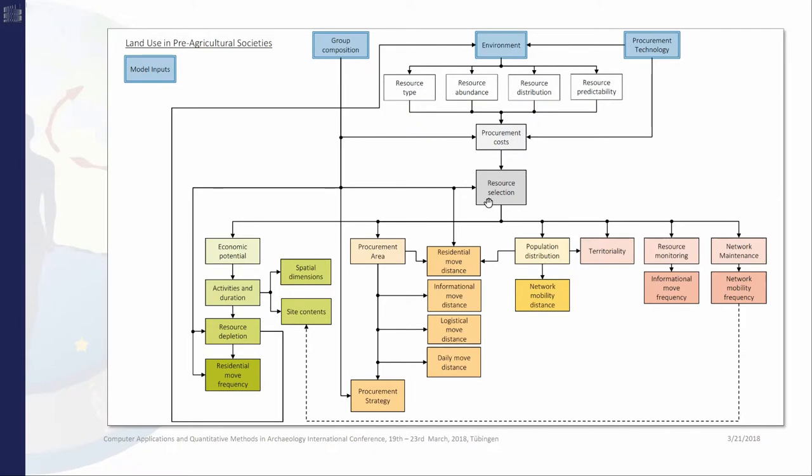The model starts at the top with three inputs in blue: group composition, environment, and technology. This translates to which people are living in which environment and which tools or technologies they have at their disposal. These three inputs determine the cost of procuring a resource, and that determines the selection of resources the group uses.